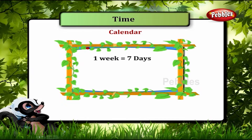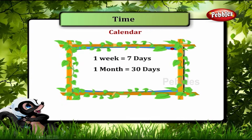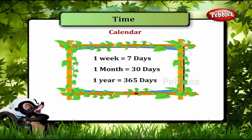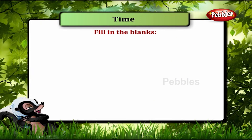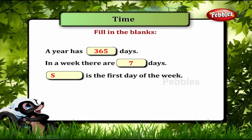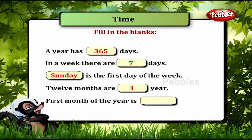One week is equal to 7 days. One month is equal to 30 days. One year is equal to 365 days. Fill in the blanks: a year has 365 days, in a week there are 7 days, Sunday is the first day of the week, twelve months are one year, and the first month of the year is January.